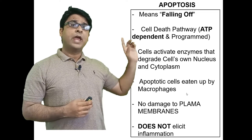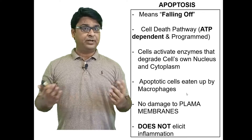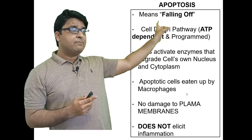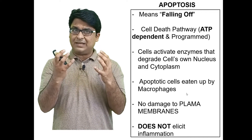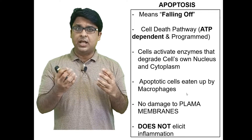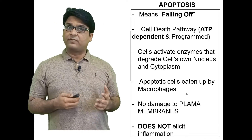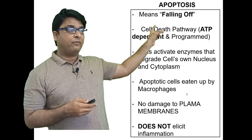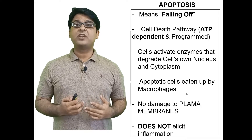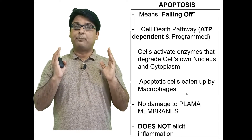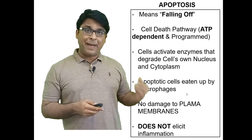Today we are going to discuss apoptosis, which is one of the different cellular death pathways that happen in your body. Apoptosis literally means 'falling off' — the cells get fragmented from the inside and are ultimately taken up by phagocytes. Remember that apoptosis is also known as a programmed cell death pathway which requires ATP; it is an energy-dependent cellular death mechanism.